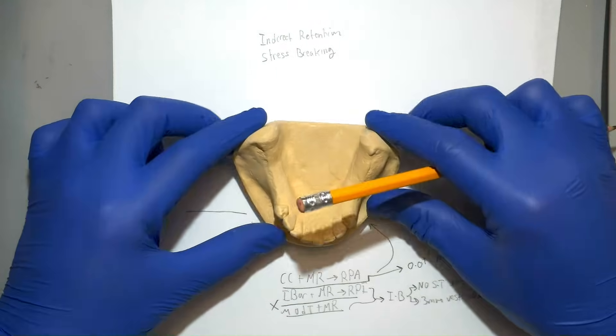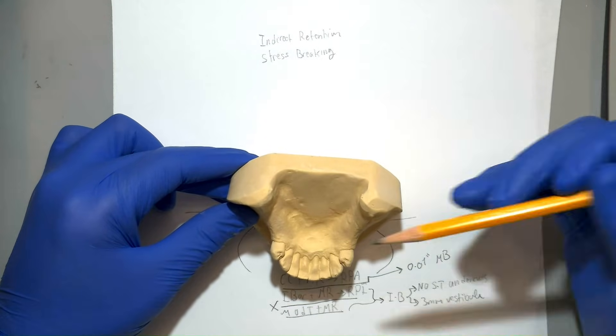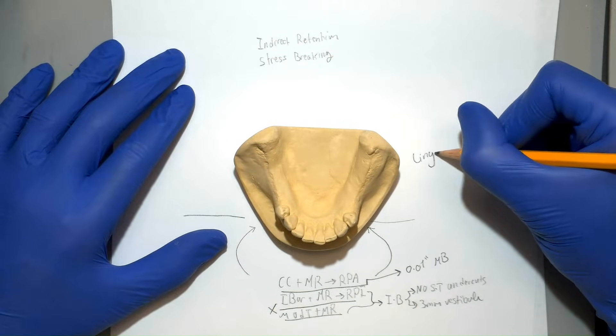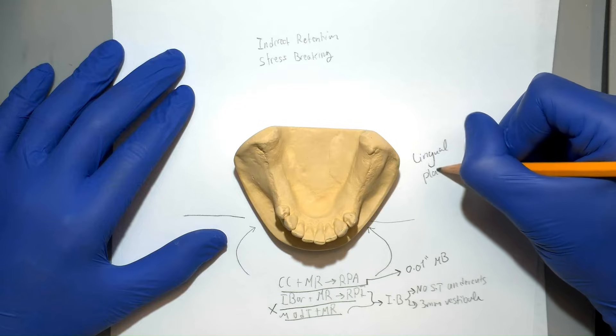Another thing to note here is that on the lingual side of the anterior teeth, there is significant soft tissue recession, which means that most likely a lingual plate would be recommended to support those periodontally weakened teeth.